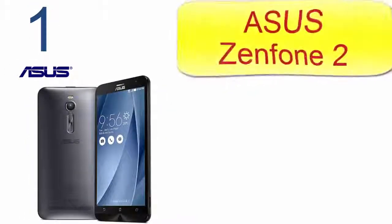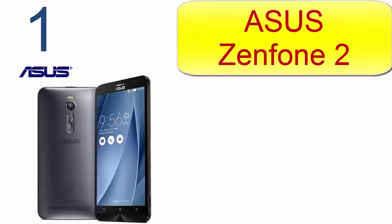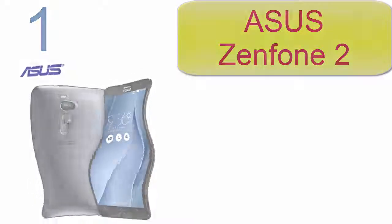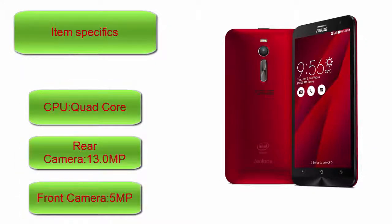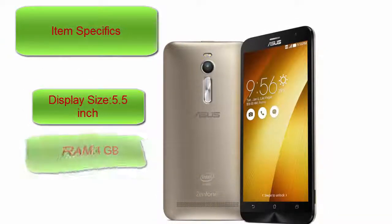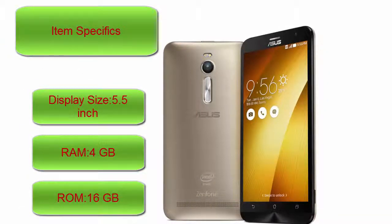Here is product number 1: ASU ZOOPHONE 2. Item specifics — CPU: Quad Core, Rear Camera: 13MP, Front Camera: 5MP, Display Size: 5.5 inch, RAM: 4GB, Storage: 16GB.